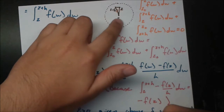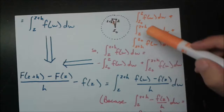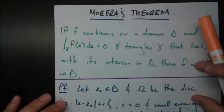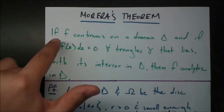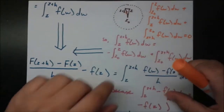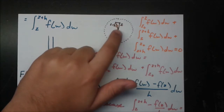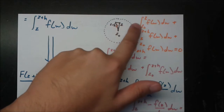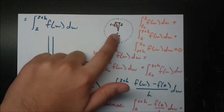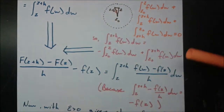Since z₀, z, and z+h form a triangle inside omega, and omega is inside the domain, this is a triangle inside the domain. By the conditions of Morera's theorem, all triangles have a line integral of zero when you go around them. That closed loop is composed of three parts: z₀ to z, z to z+h, and z+h back to z₀. So the sum of all those integrals equals zero.